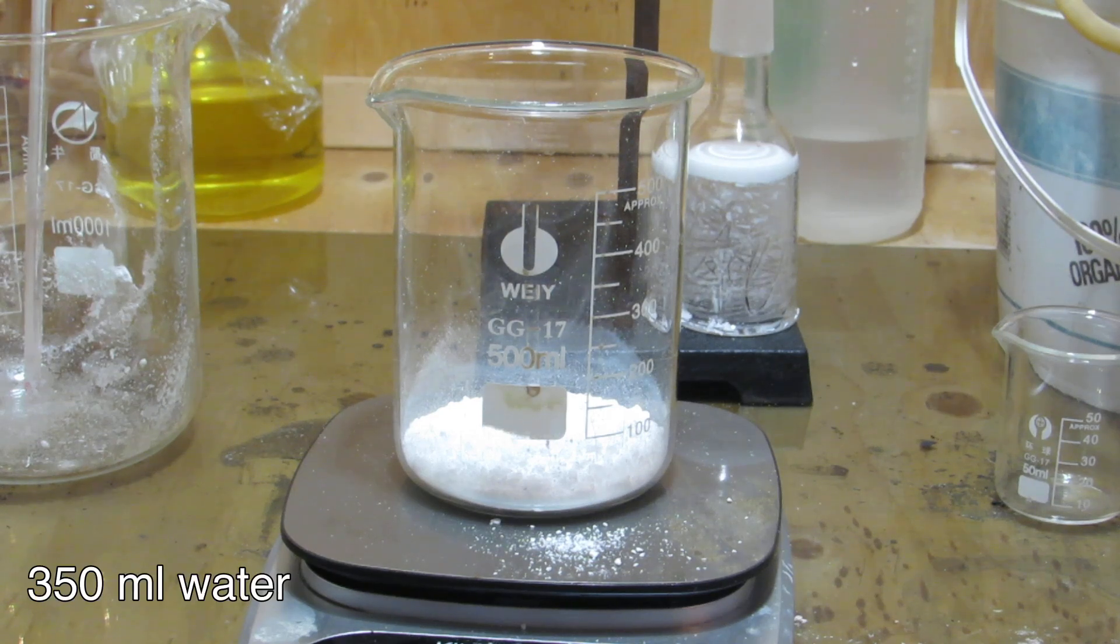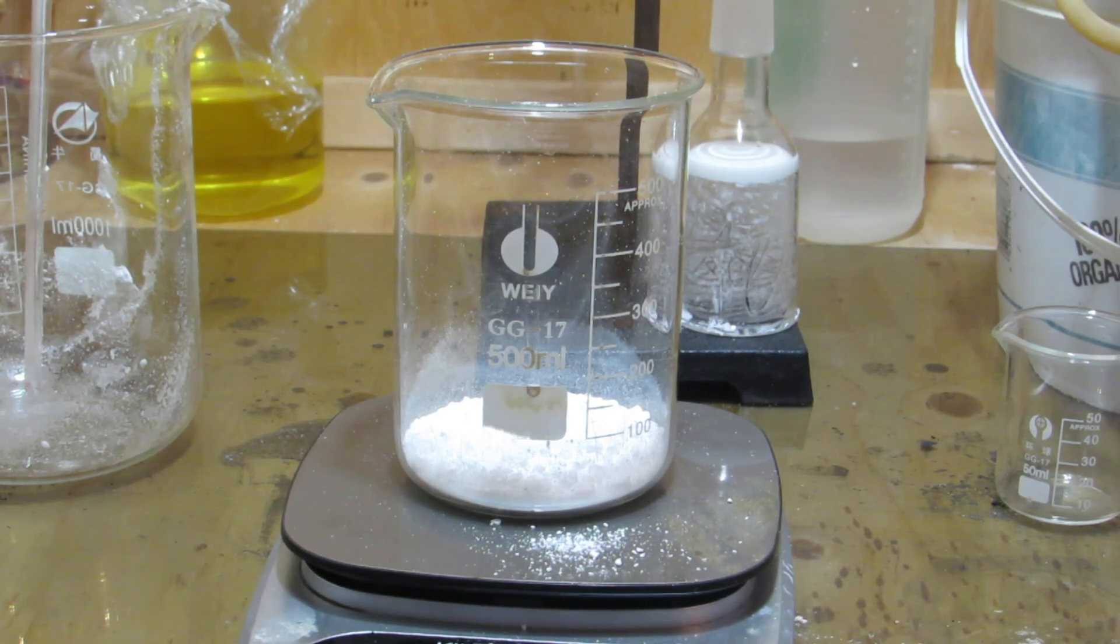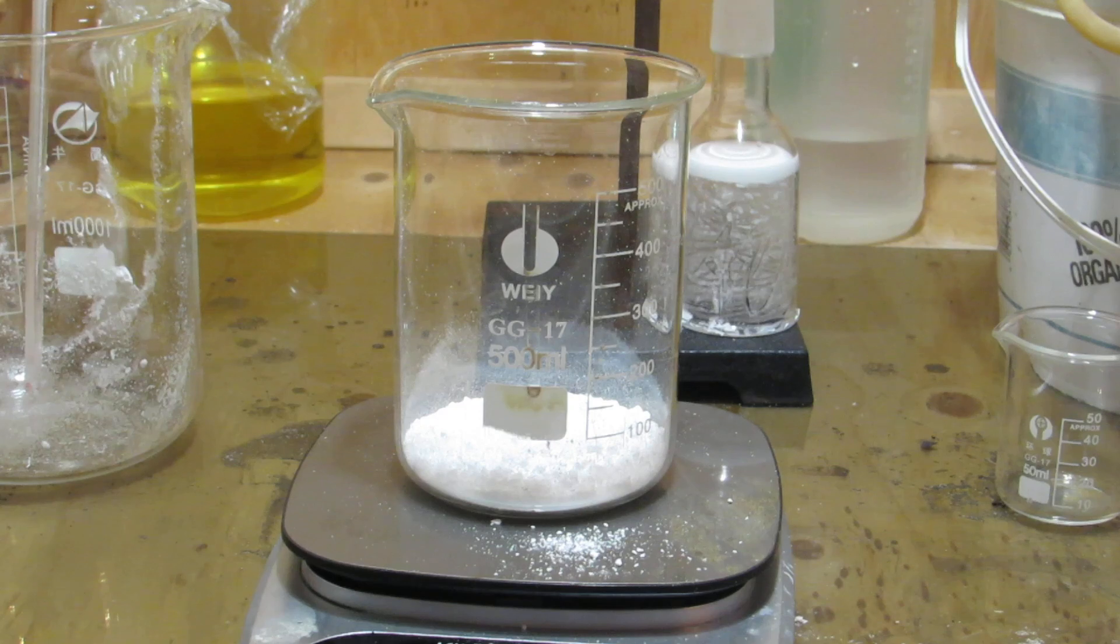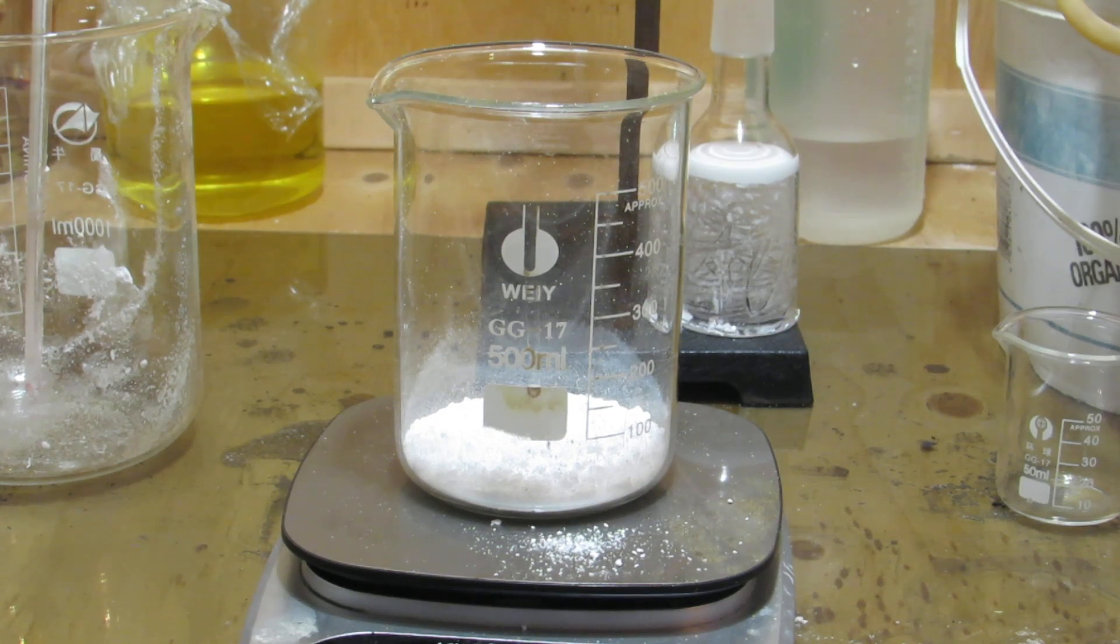To purify the benzoic acid, 350 milliliters of water was added and it was heated to just below the boiling point. The solution was then cooled over a few hours and then transferred to the fridge to fully crystallize. Some nice pure benzoic acid crystals formed.